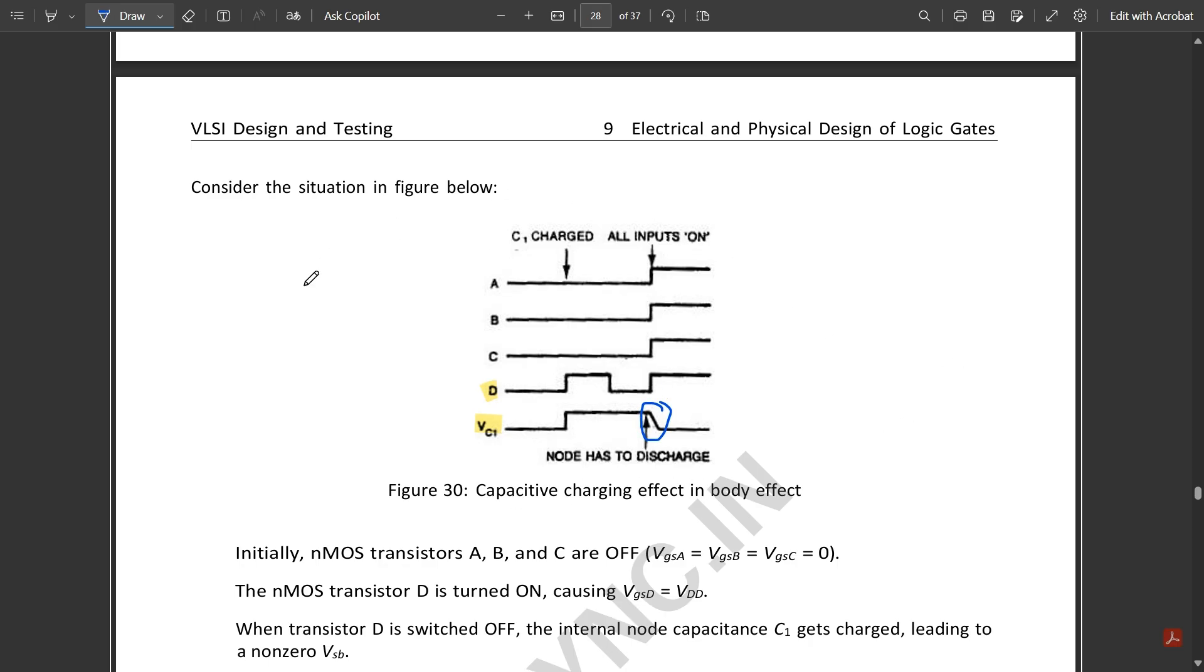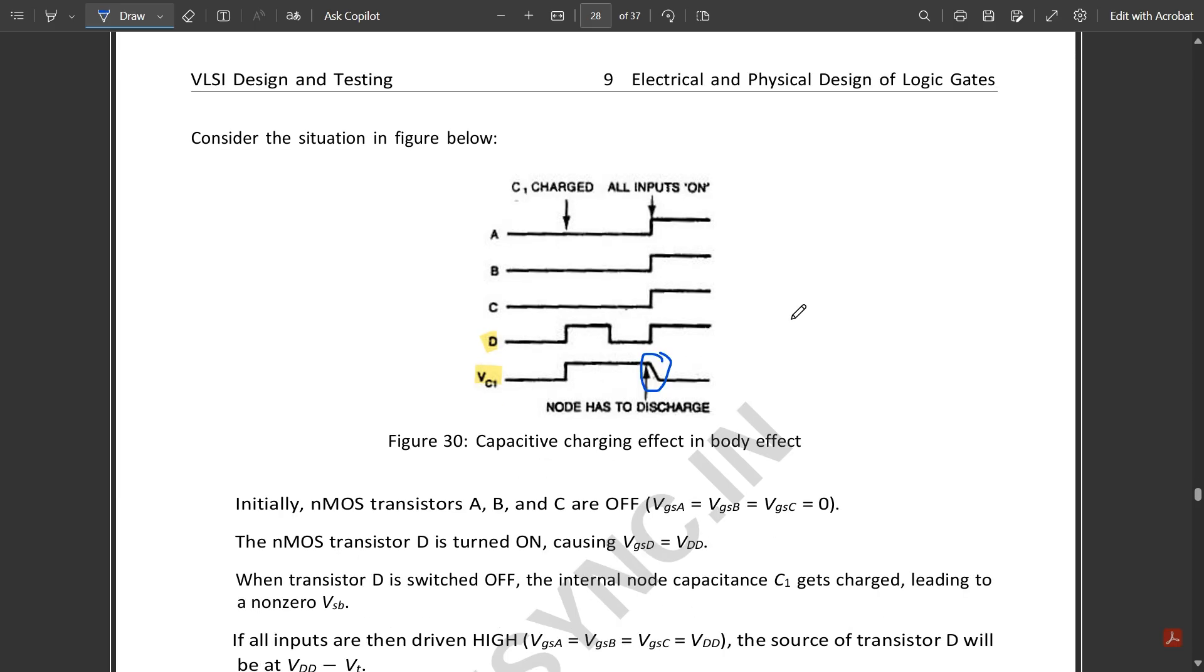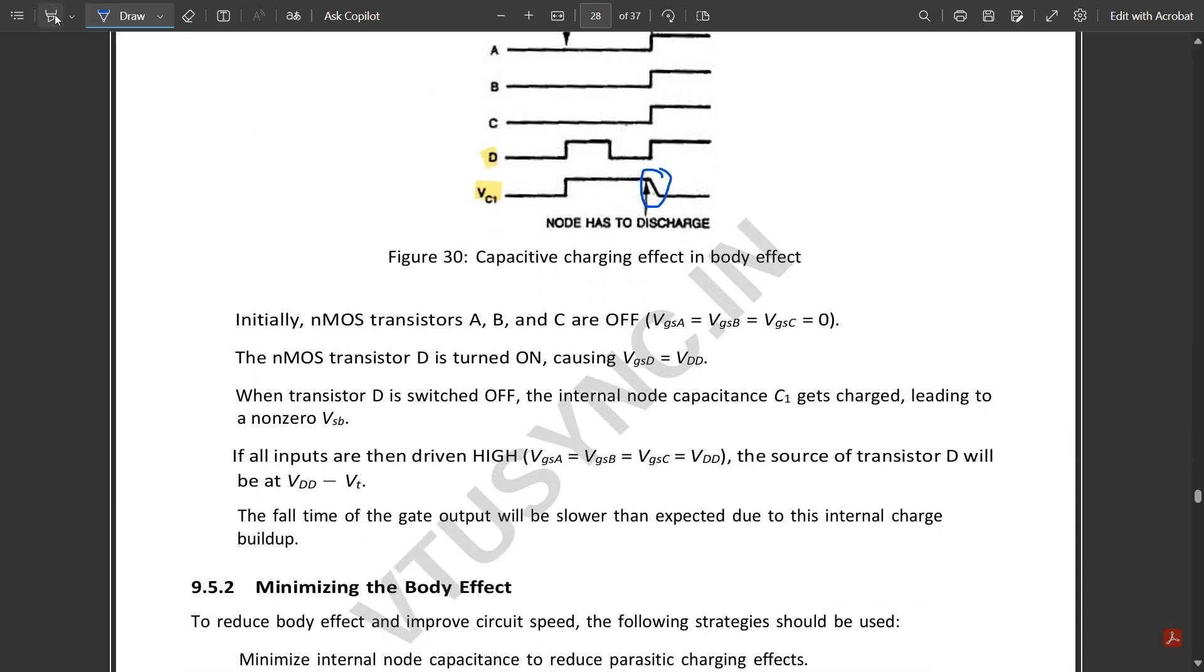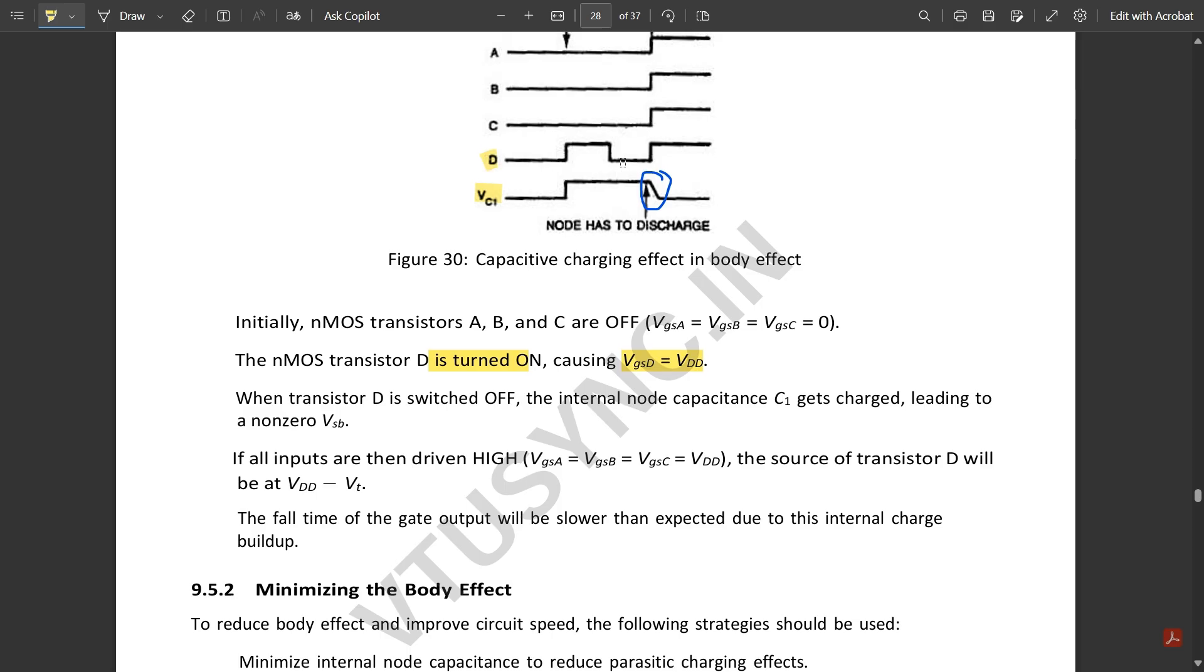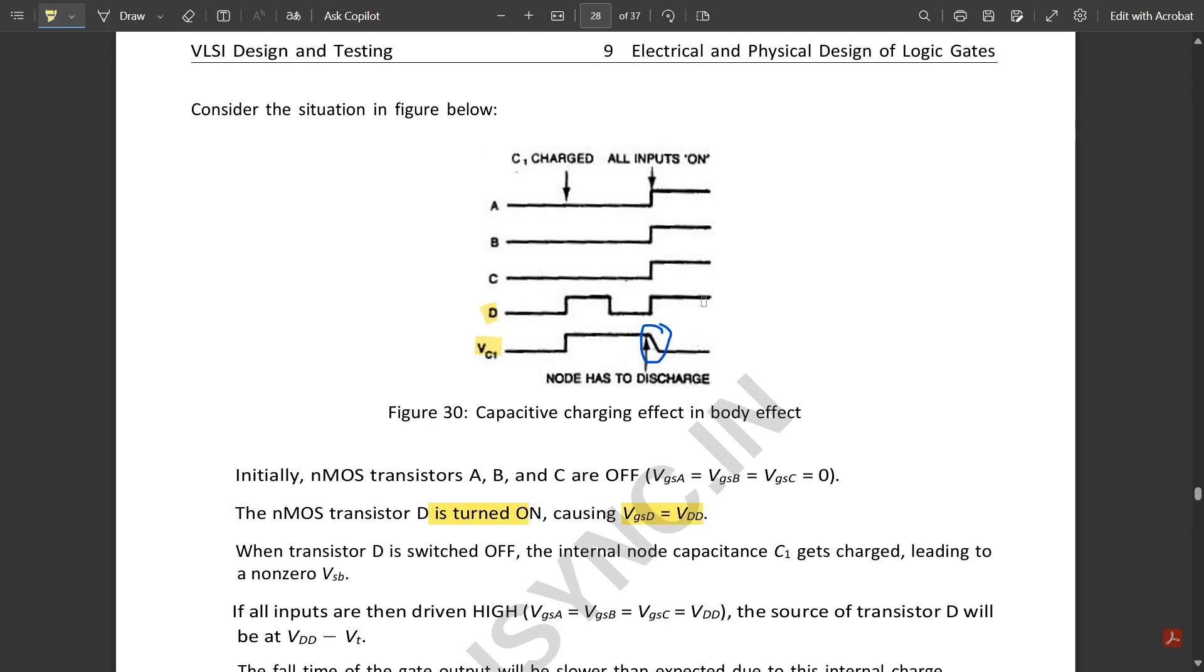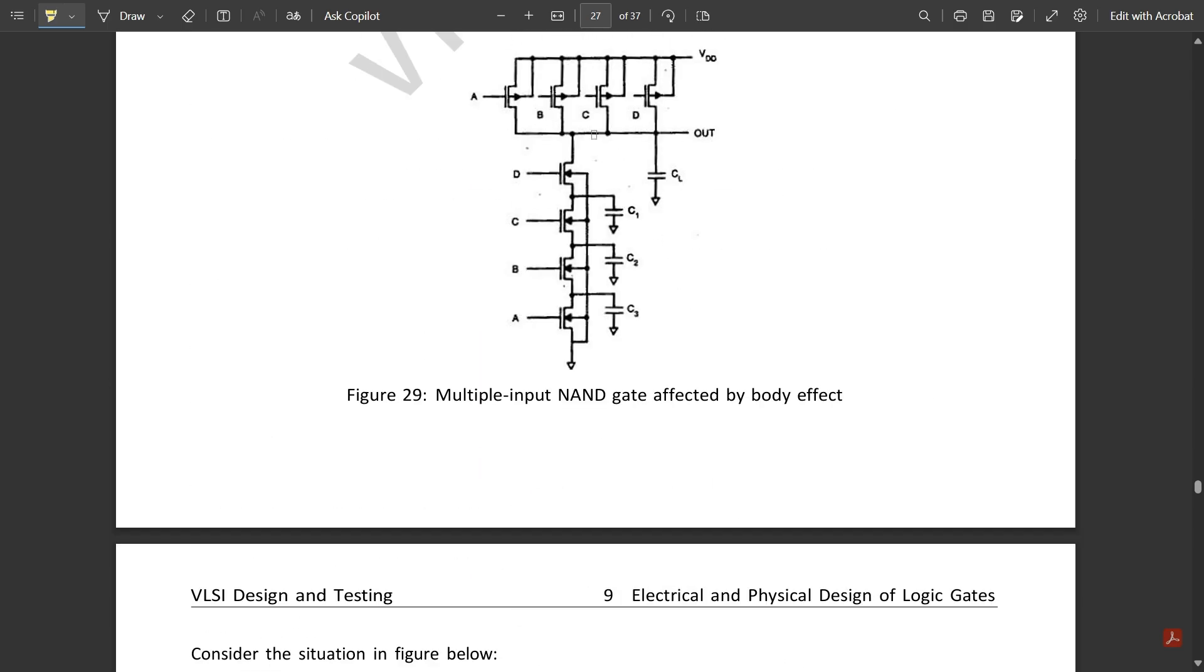Initially nMOS transistors A, B, and C are off, meaning Vgsa equals Vgsb equals Vgsc equals zero. The nMOS transistor D is turned on causing Vgsd equals Vdd. When transistor D is switched off, we don't have any toggling signal but we won't get any output because this is directly given to the output, so D should be on always.